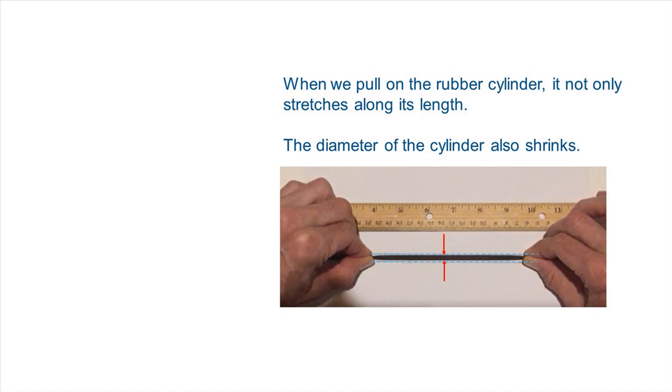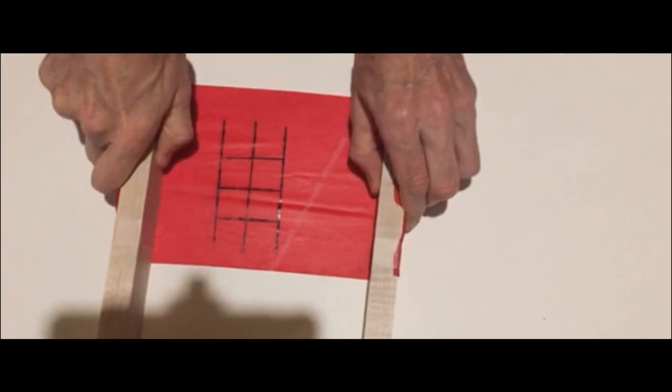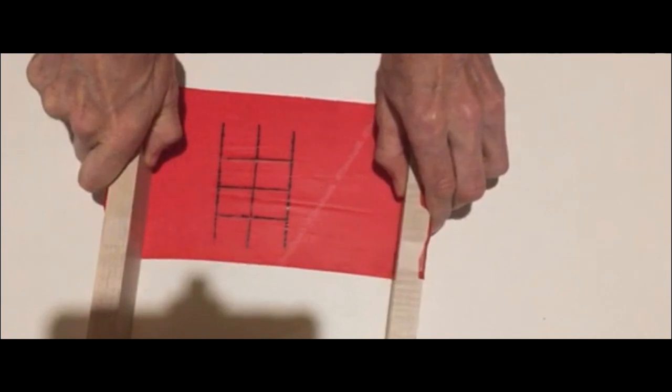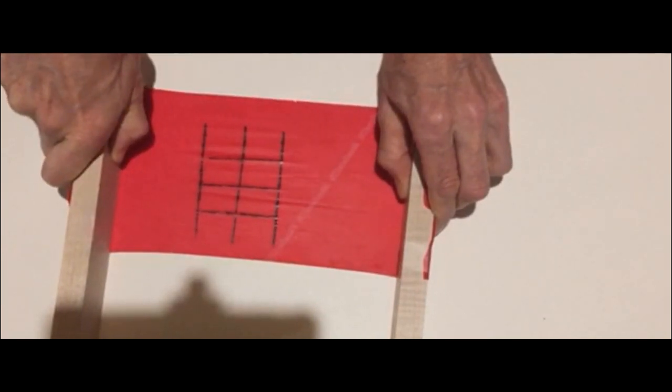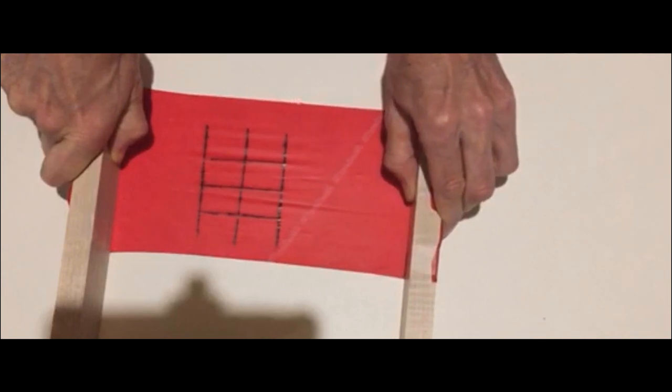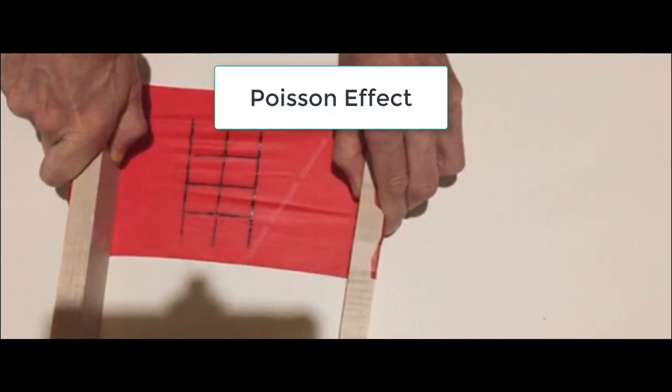We can better observe this effect by pulling on a thin rubber sheet. We used a Sharpie marker to create a 2.5 cm square grid on the sheet. When we pull on this thin sheet of rubber, the squares become more and more rectangular. The phenomenon that we are observing is what is known as the Poisson effect.